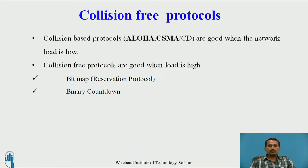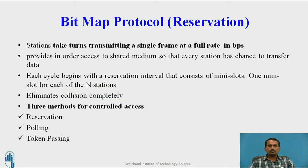Collision-free protocol: bitmap protocol. The bitmap protocol, we can also call it a reservation protocol. Stations take turns transmitting a single frame at a full rate in bits per second. It provides in-order access to the shared medium so that every station has a chance to transfer data. Each cycle begins with a reservation interval consisting of mini slots — one mini slot for each of the N stations. There are three different methods used: reservation, polling, and token passing.